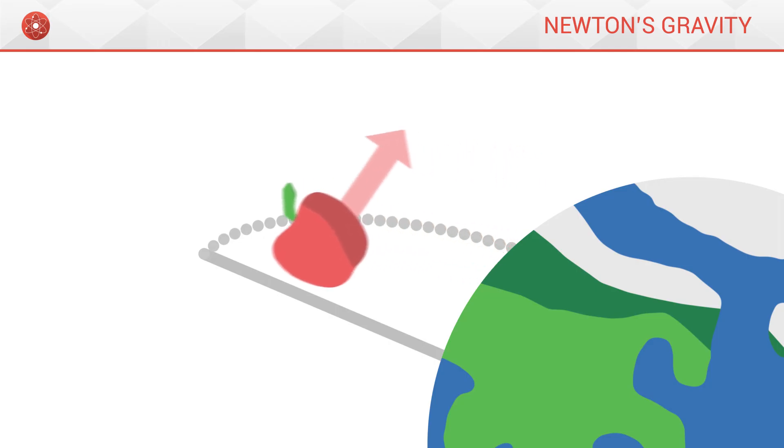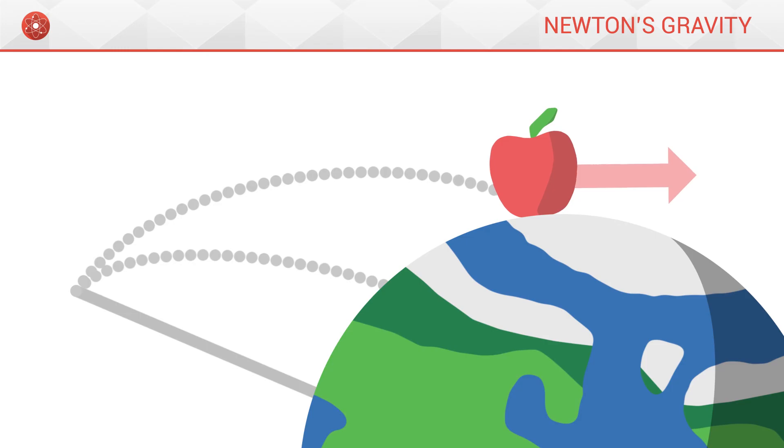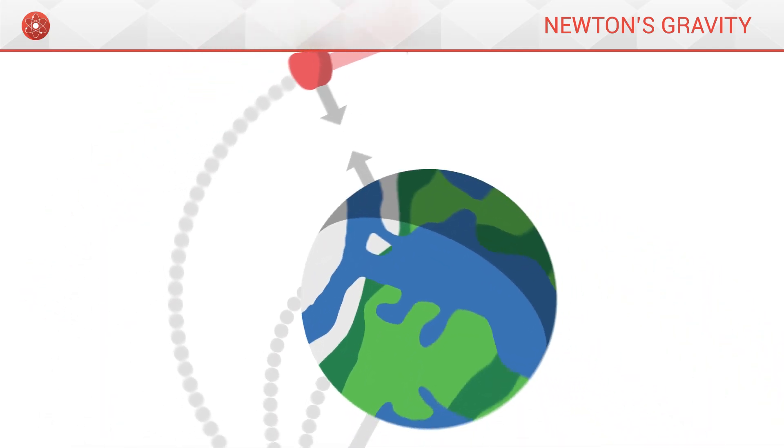The faster the apple is thrown, the further the apple falls. Now, if we could throw the apple with a high enough speed, we would see that this velocity would counter the gravitational pull, and that the apple would never fall down on the ground.